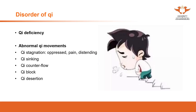Spleen and stomach qi stagnation can present as distending feeling of the abdomen, fullness, pain, or constipation — because qi is not moving the stool. For qi stagnation due to qi deficiency, symptoms might be mild; qi stagnation can also be due to excess qi, where too much qi in the pathway causes blockage, resulting in worse symptoms such as pain and distending feeling.